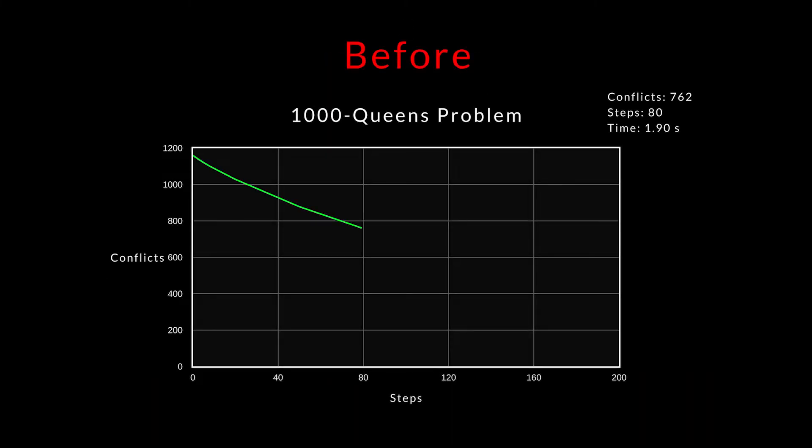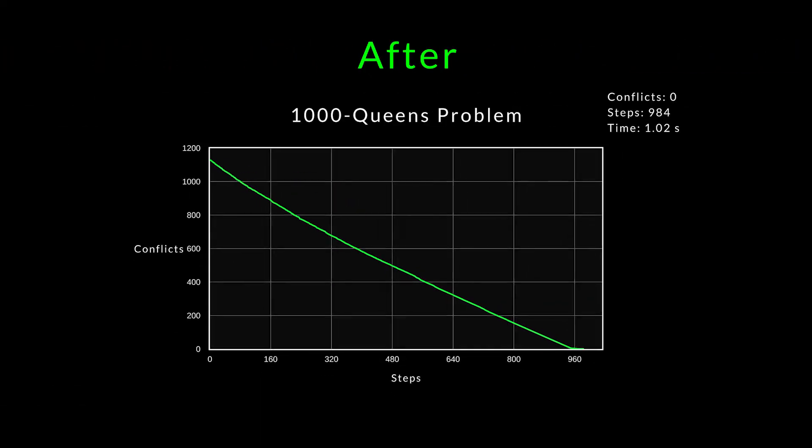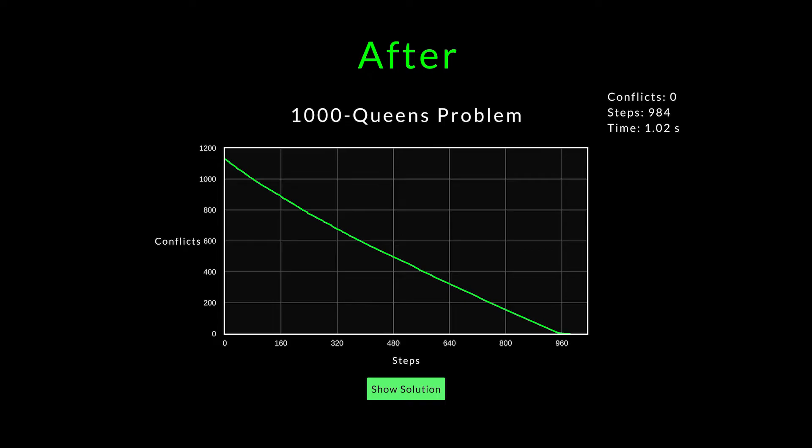Here is the 1000 queens problem again, before and after this change. So much better. It was extremely fast in the beginning, because it didn't have to try many moves to find one which reduced the conflicts.